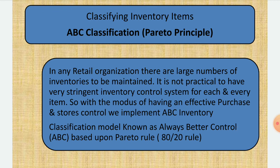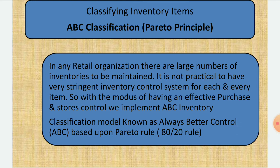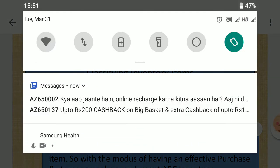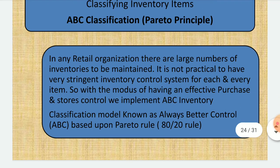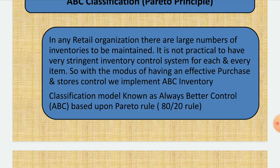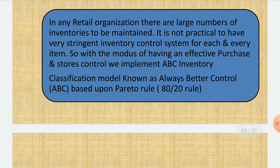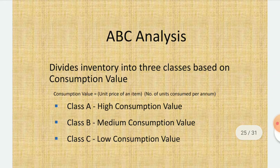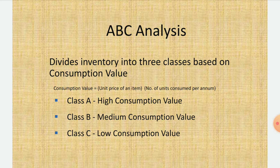An important classification of inventory items is ABC analysis, also called Pareto analysis. In any retail organization, there are a large number of inventory items, and it is not practical to control each one equally. So inventory is classified into three types using the Always Better Control method — ABC. Class A is high consumption value, Class B is medium consumption value, and Class C is low consumption value.